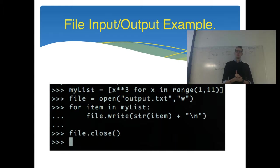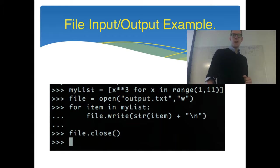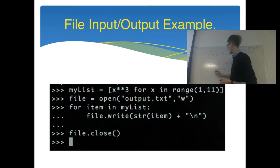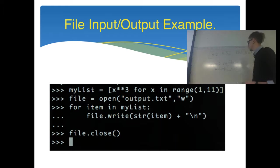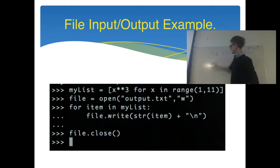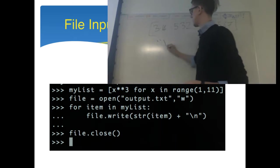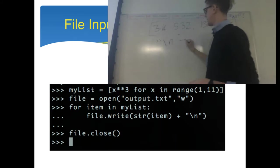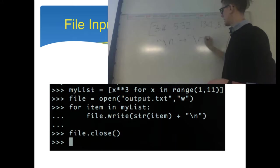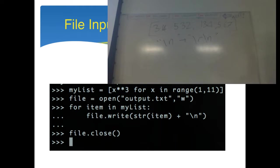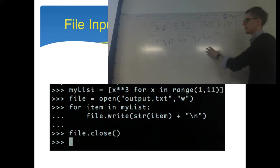If you're working on Windows, you might find that you don't get new lines. The reason is that the newline character in Windows is not just backslash n — it's actually backslash r, backslash n. So if you're on Windows and you get all your text on one line, change the backslash n to backslash r, backslash n.